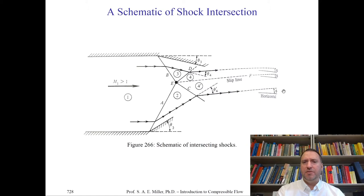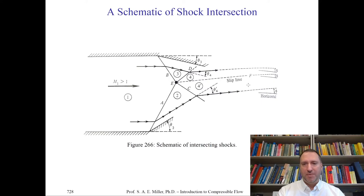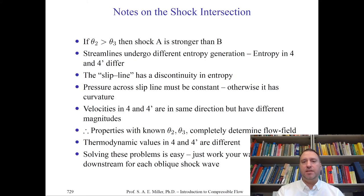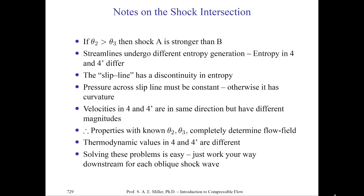You'll also notice that the new deflections after the reflections must all be the same. They're separated by what we call a slip line — a new kind of fluid dynamic phenomenon that forms in this situation. The slip line represents a discontinuity in the flow of the inviscid equations of motion, where the velocities are in the same direction but the fluid dynamic and thermodynamic properties may be different.